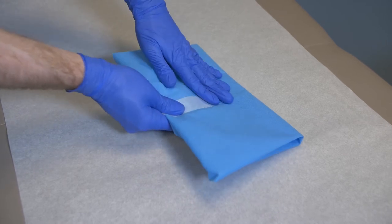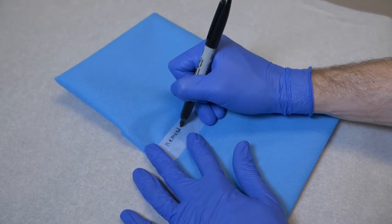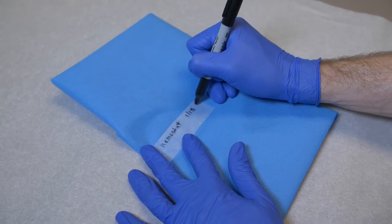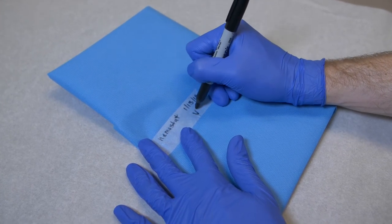Tape with the autoclave tape across the point that is left exposed. You will then need to label the name of whatever it is in the package, the date of the sterilization and mark your initials.